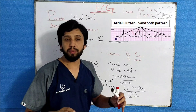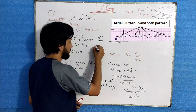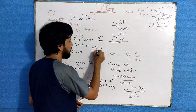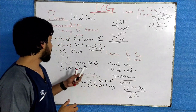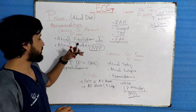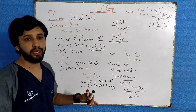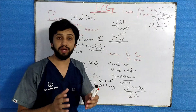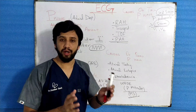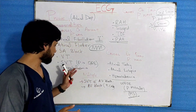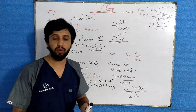In atrial flutter there will be a fluttering saw-tooth pattern seen on the ECG paper. Likewise, in SA block there will be an absent P wave. In ventricular tachycardia and supraventricular tachycardia, the P wave is hidden within the QRS complex. In hyperkalemia, there will also be an absent or small P wave seen on the ECG paper.